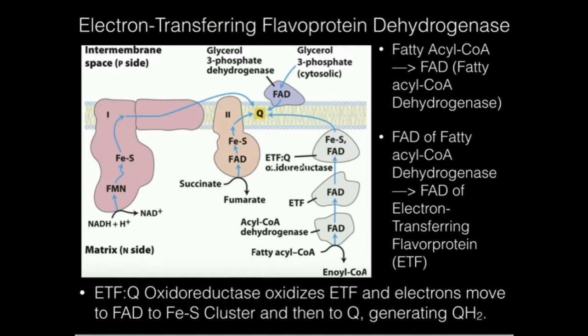In terms of delivering reduced cofactors such as NADH and FADH2 into the electron transport chain, complex 1 — NADH dehydrogenase — accepts NADH from various sources and pathways. Complex 2 is usually described as accepting electrons from FADH2. However, complex 2 is just one enzyme, and it reacts with one molecule only: succinate.